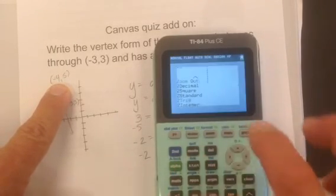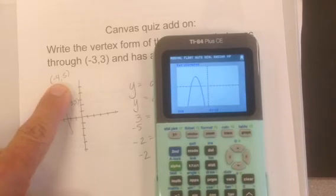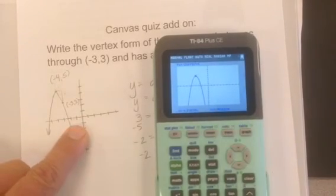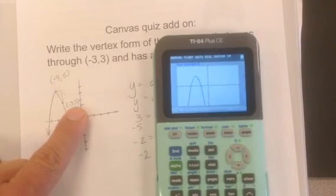Go back to my graph. I'm gonna trace negative 4, I should get 5. And I'm going to trace negative 3 and I should get 3, and it hit.